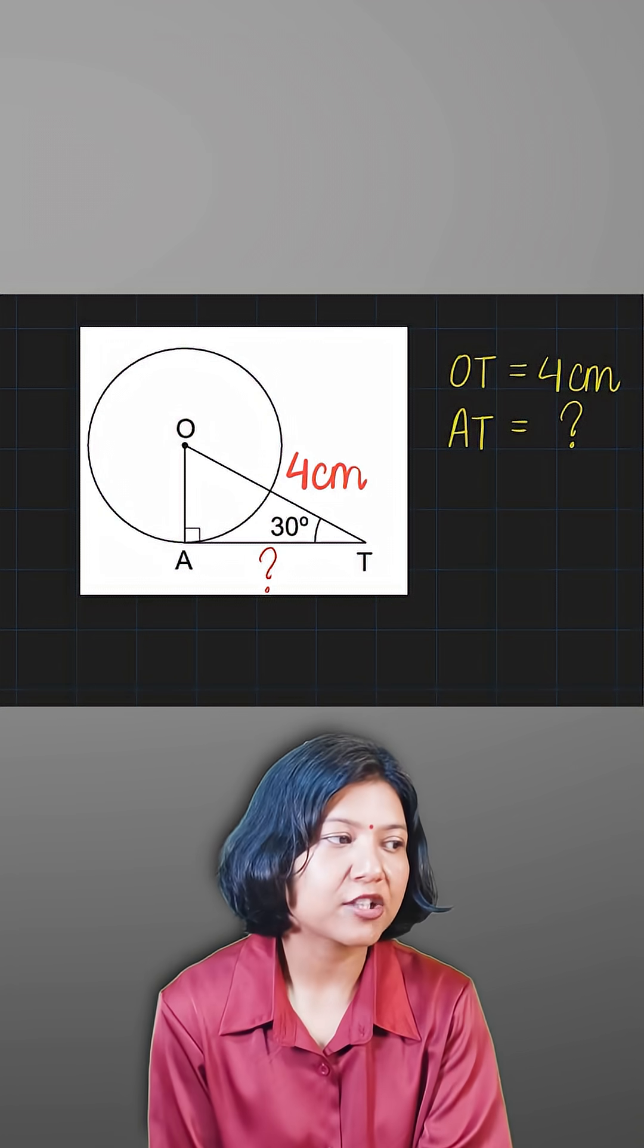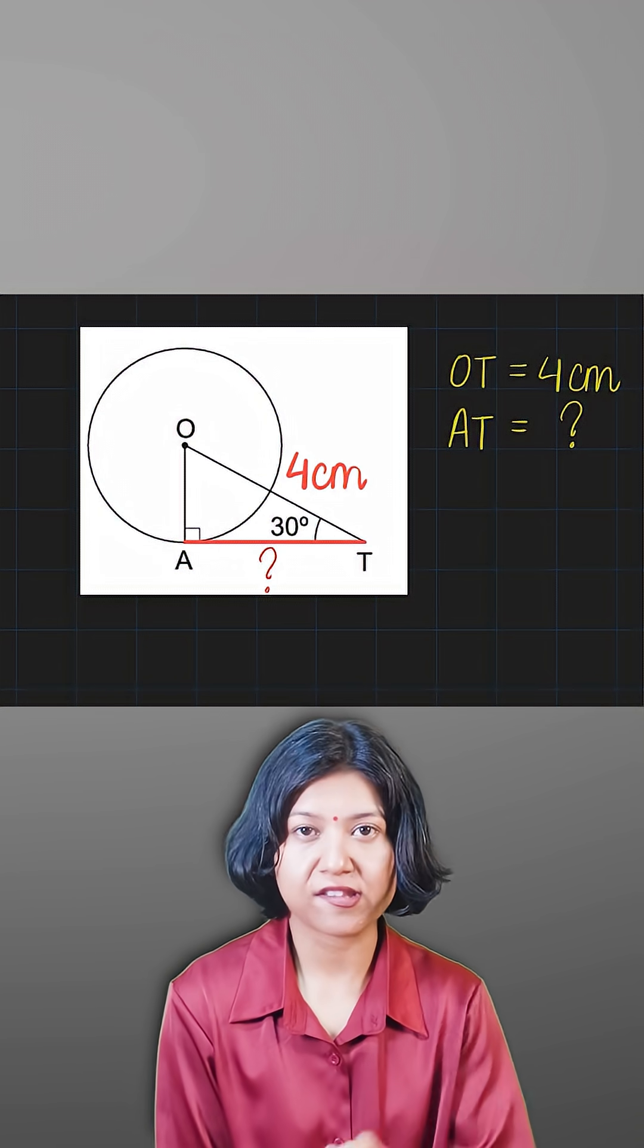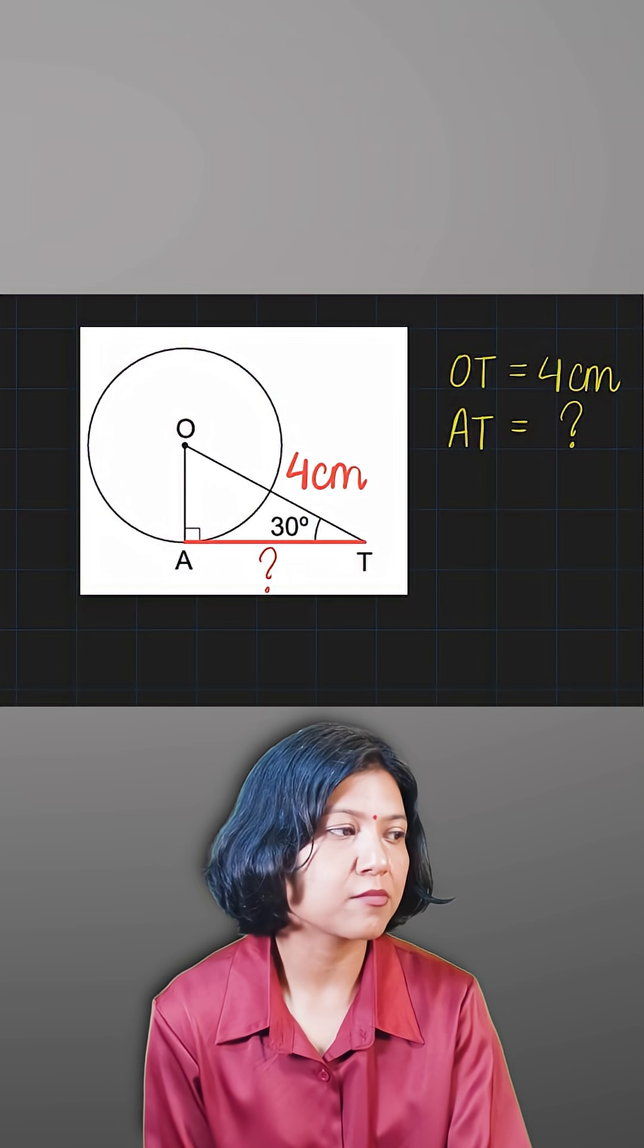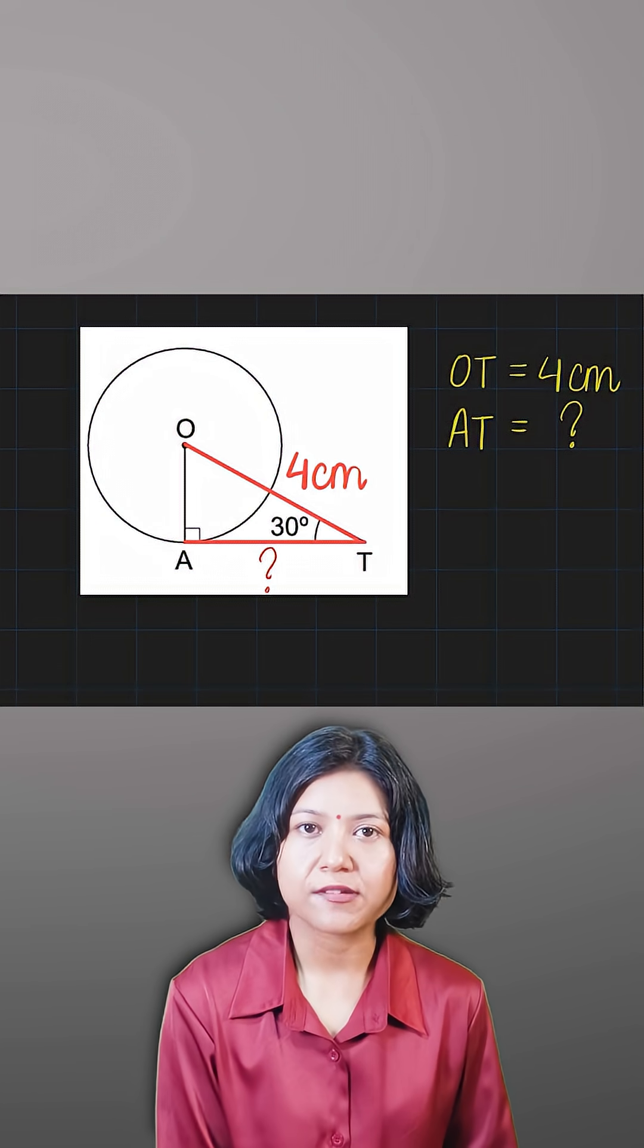With respect to this angle, the side that is missing is the adjacent side, and the side that's given to me is the hypotenuse. So what connects adjacent with the hypotenuse? It is the cos, right? The cos ratio.